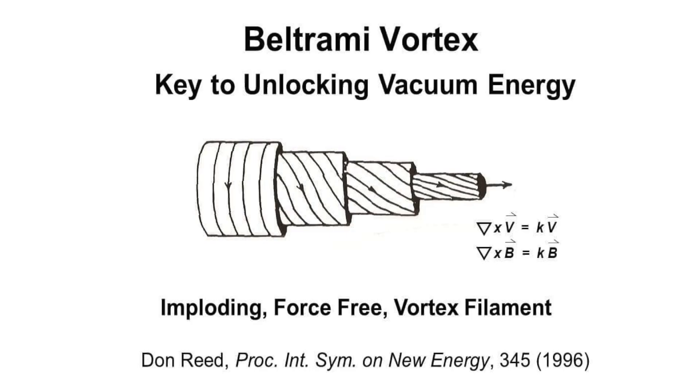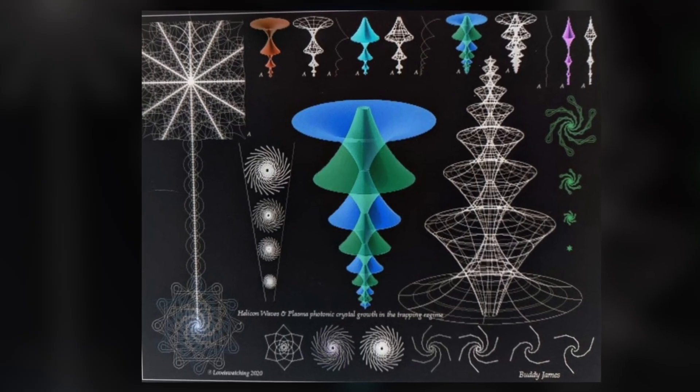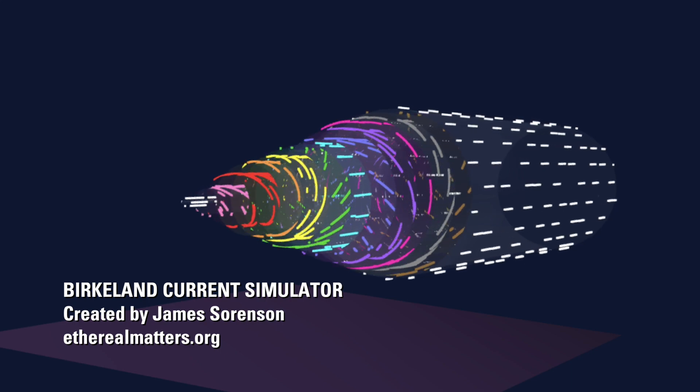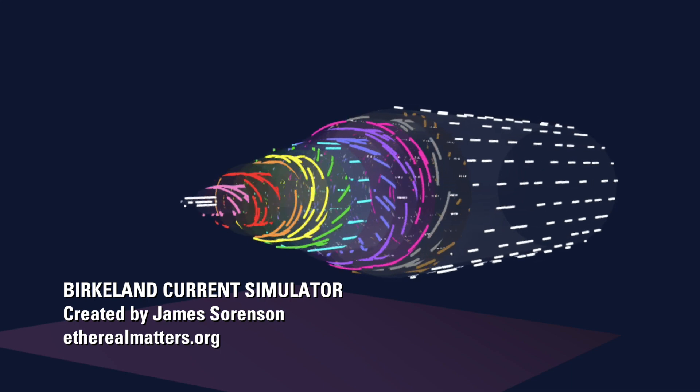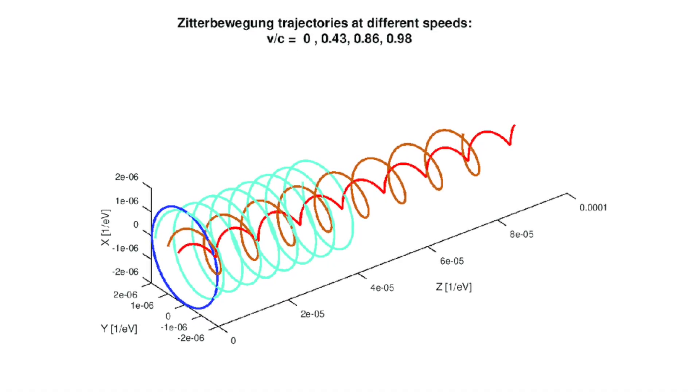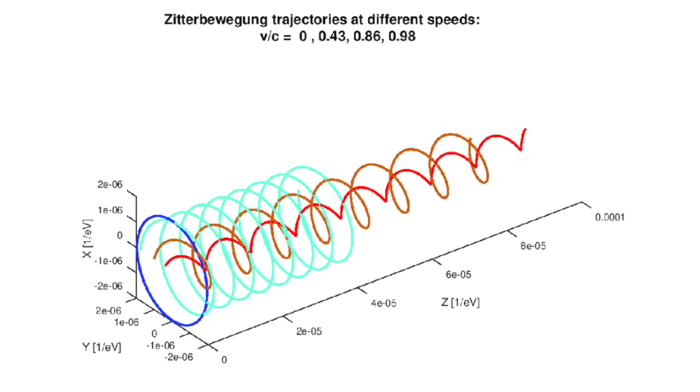Then the Lord answered Job out of the whirlwind, and Elijah went up by a whirlwind into heaven. In 1835, here we have Eugenio Beltrami and the Beltrami vortex. This is the geometry of what we in the electric universe refer to as Birkeland currents.